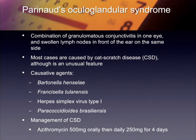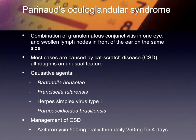Francisella tularensis — formerly Pasteurella tularensis — causes tularemia. It can give you an ocular-glandular syndrome. Herpes, which we talked about, and a couple of others in this talk can give you Parinaud's. Paracoccidioidomycosis is also on the list. The management is basically a Z-pak, and most of them do fine.